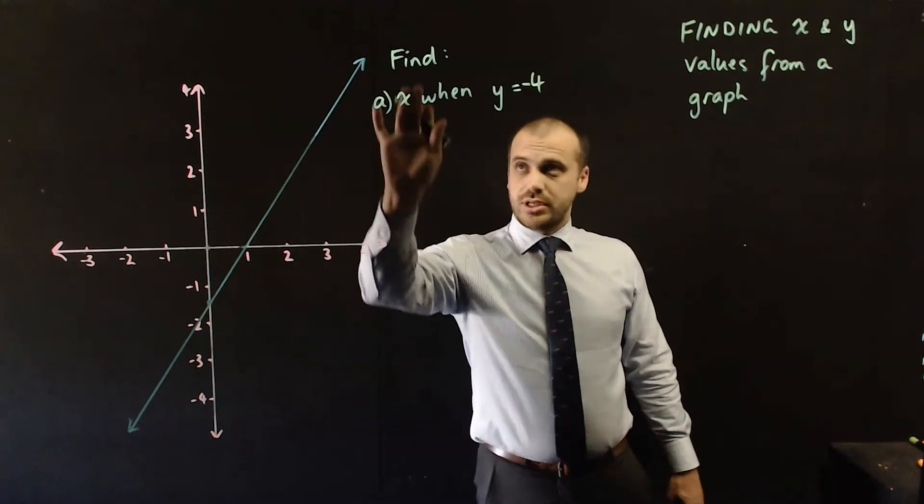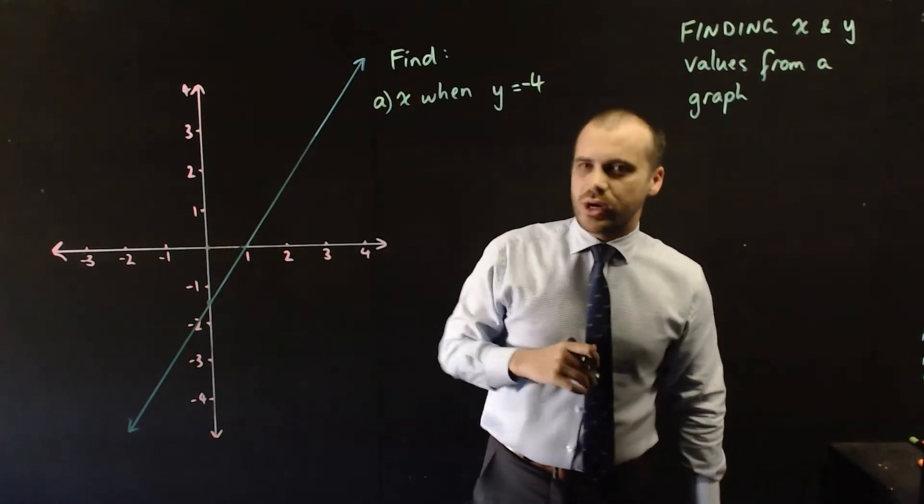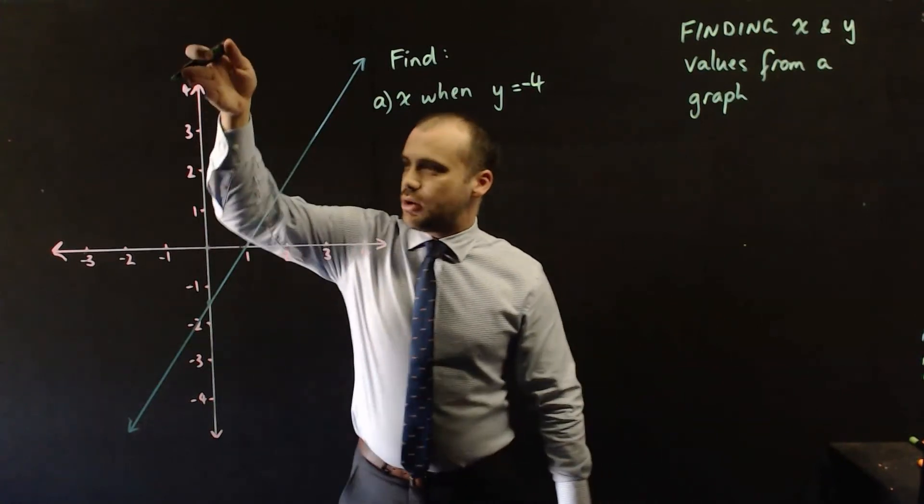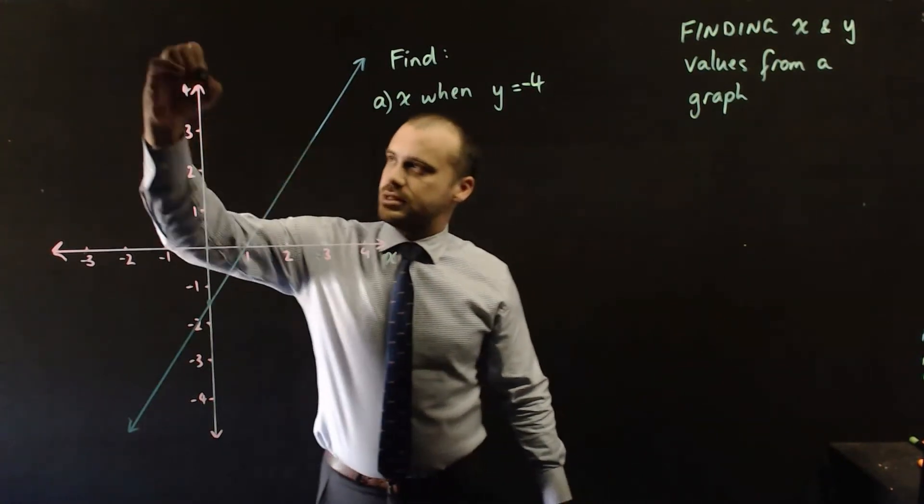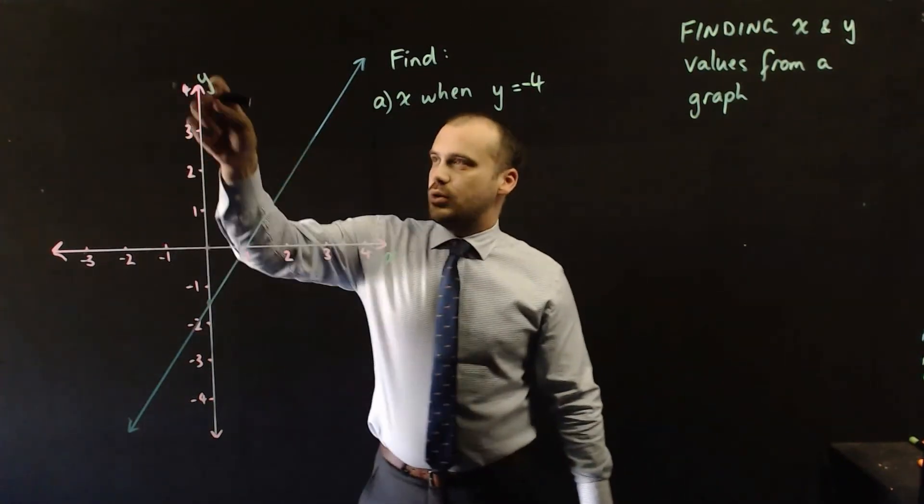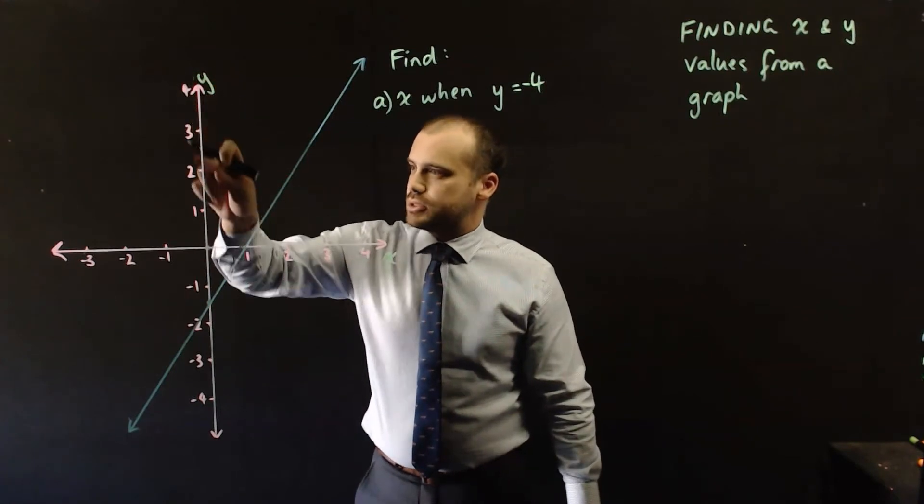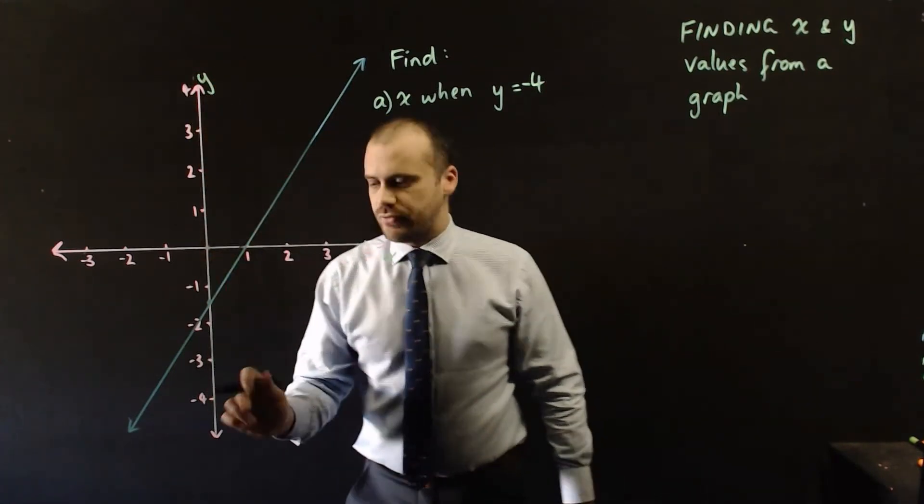So our first question is find x when y equals negative 4. Okay, so this is our y axis. This is our x axis. This is our y axis. So when y equals negative 4, y equals negative 4. There it is. y equals negative 4.